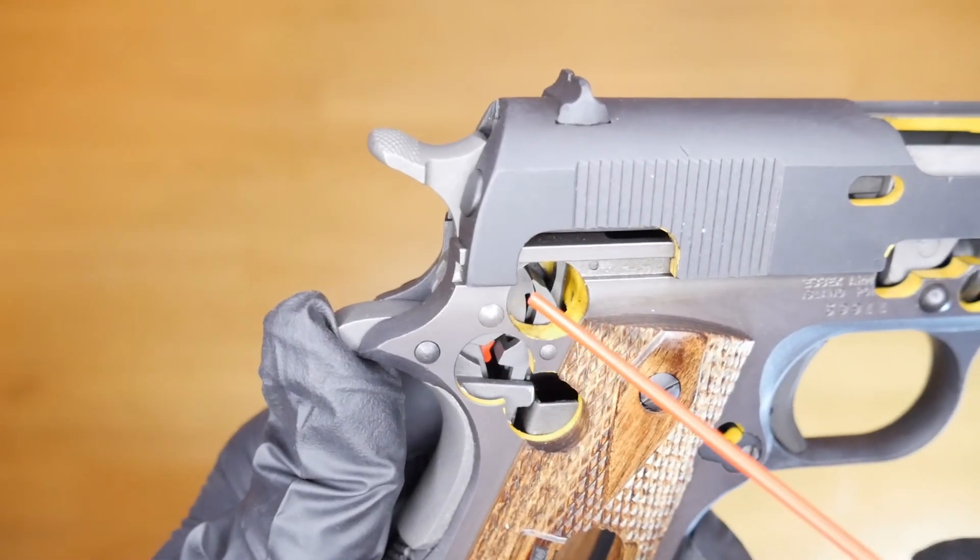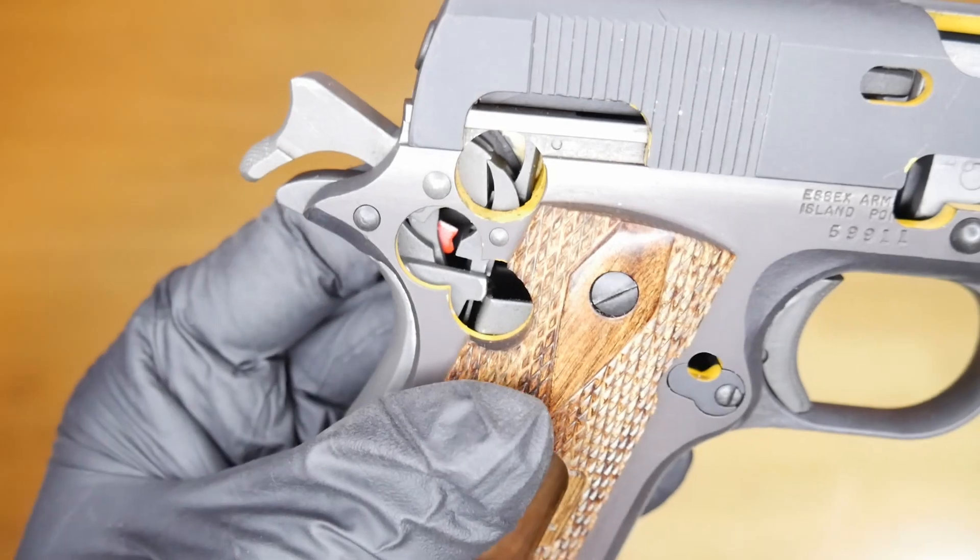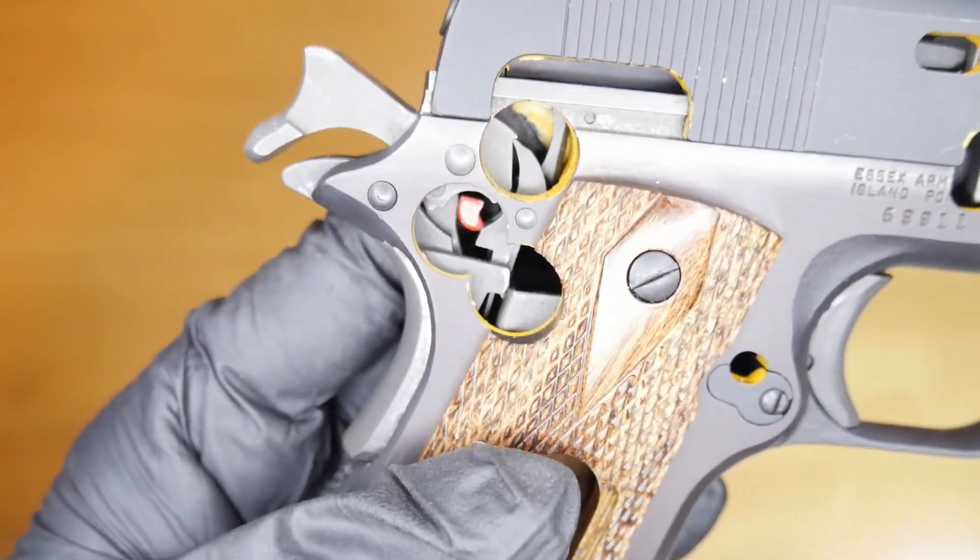Above that these three circular cuts show the interaction between the safeties and the trigger. Note the internal view of the interaction between the hammer, disconnector, and sear.